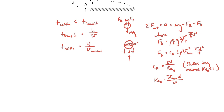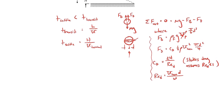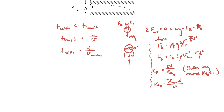Let's substitute all these expressions back into our force balance equation. One thing to note: this force balance assumes we are immediately at terminal speed. In reality, it takes some distance for the particle to reach terminal speed, but when the particles are very small, that terminal speed is reached almost immediately. So this is a very reasonable assumption.